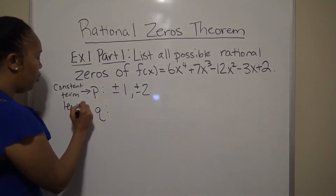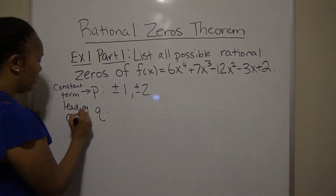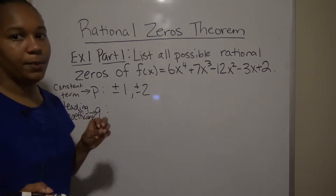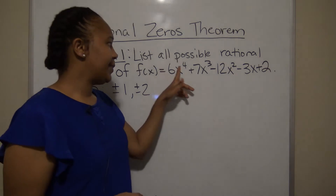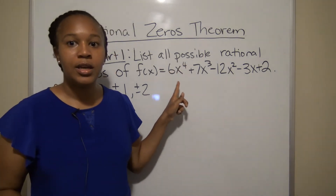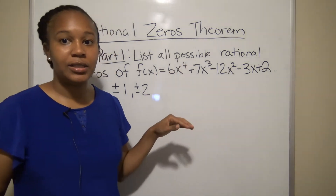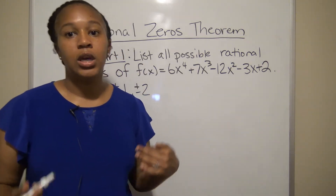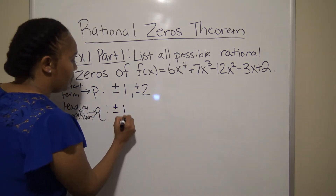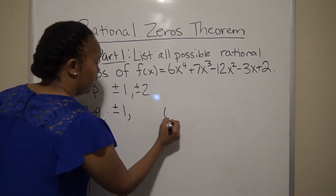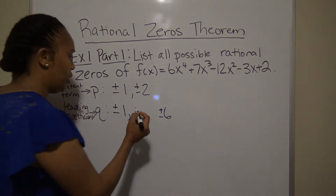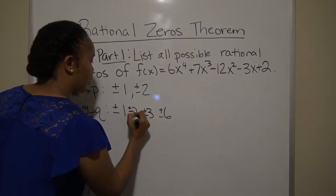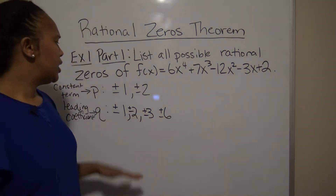Next, find q — all the factors of the leading coefficient. The leading coefficient is the coefficient of the term with the biggest exponent. The biggest exponent here is 4, and the number in front is 6. So the factors of 6 are ±1, ±6, ±2, and ±3.